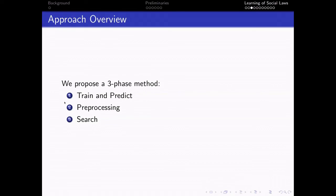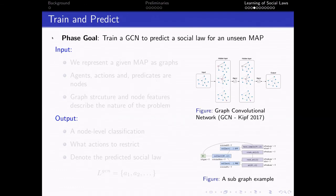We propose a three-phase method: train and predict, preprocessing, and search. In the train and predict phase, we train a GCN model, a graph convolutional neural network, to predict a social law for an unseen multi-agent problem.